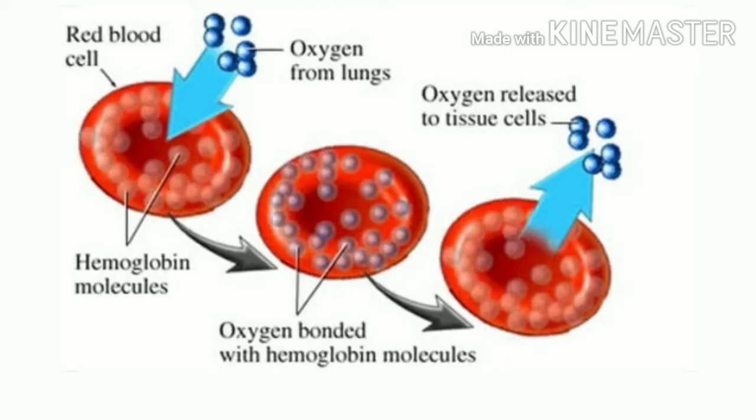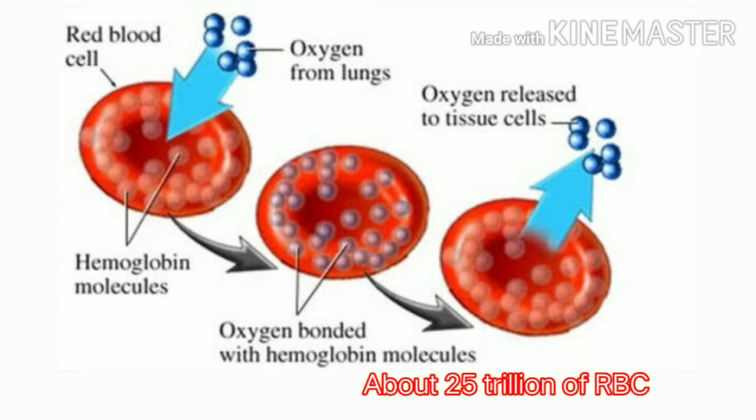For example, the RBC in the body. There are about 25 trillion RBCs. They perform the function of carrying oxygen from the lungs to the tissues.